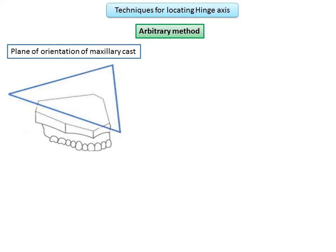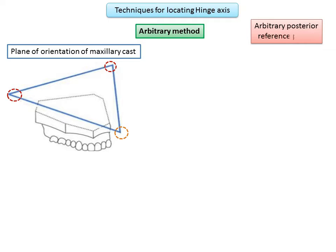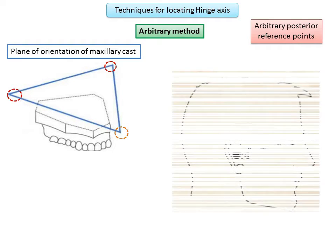To orient the maxillary cast, we mark three points based on anatomic averages: two posterior reference points and one anterior reference point. These reference points guide us in orienting the maxillary cast.